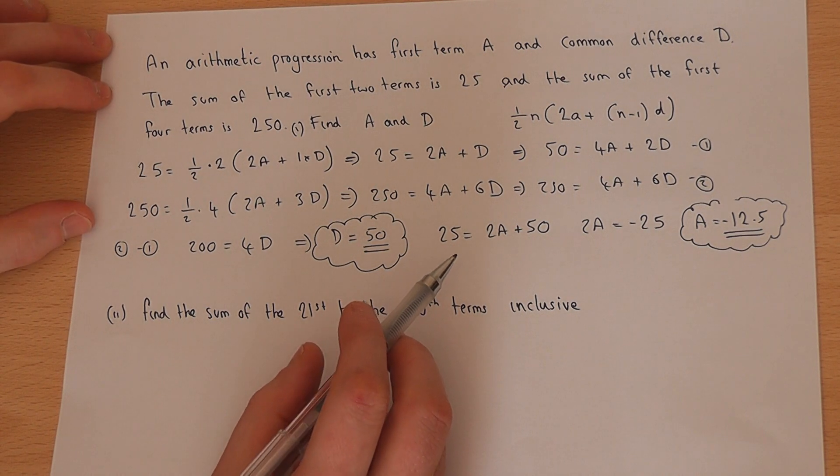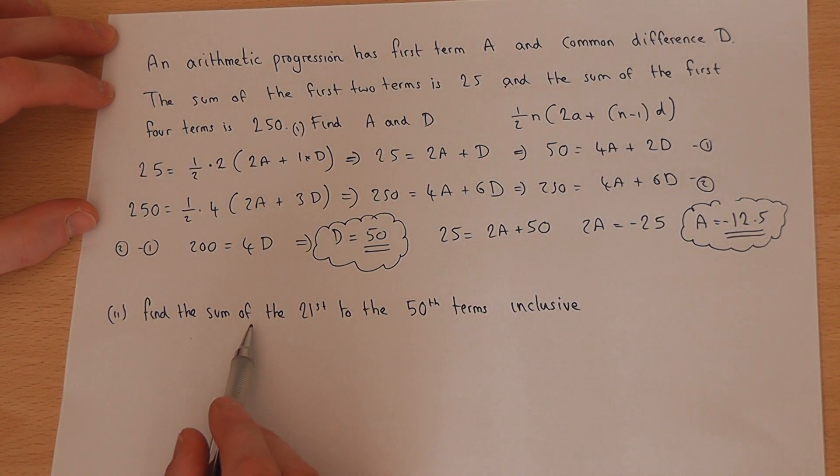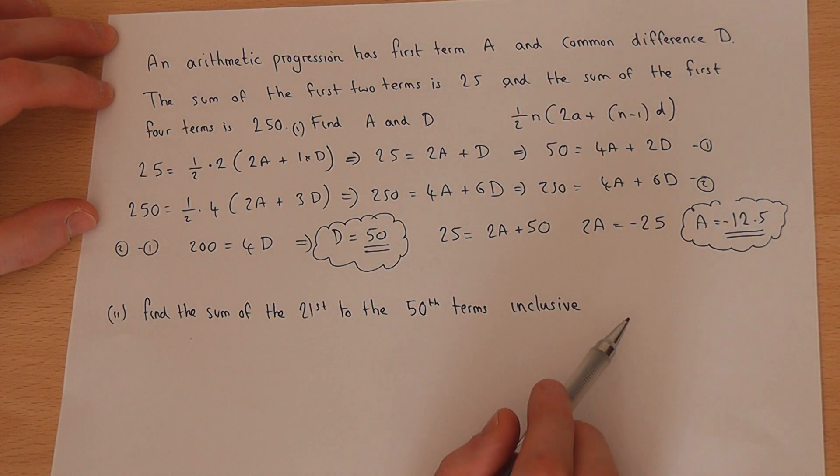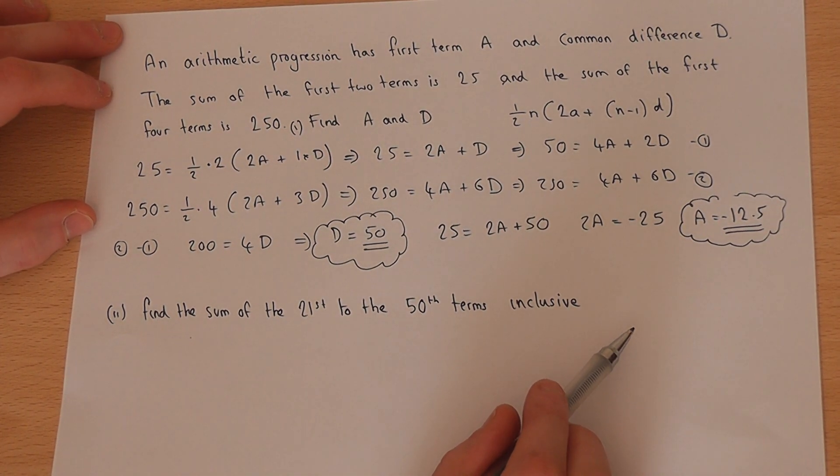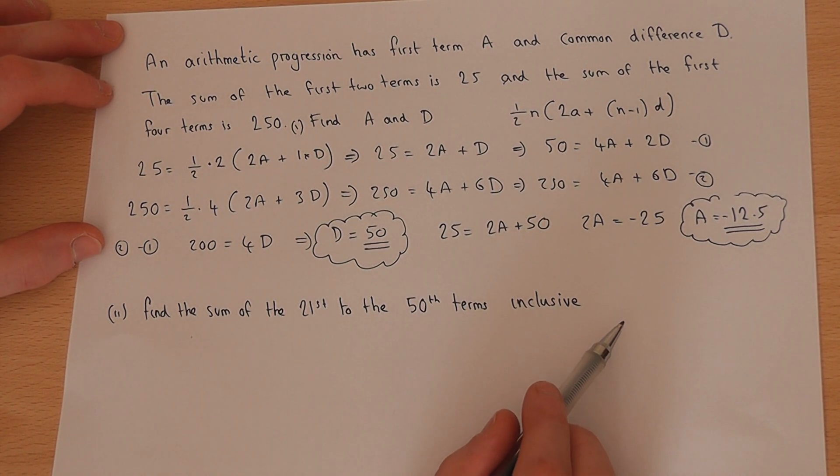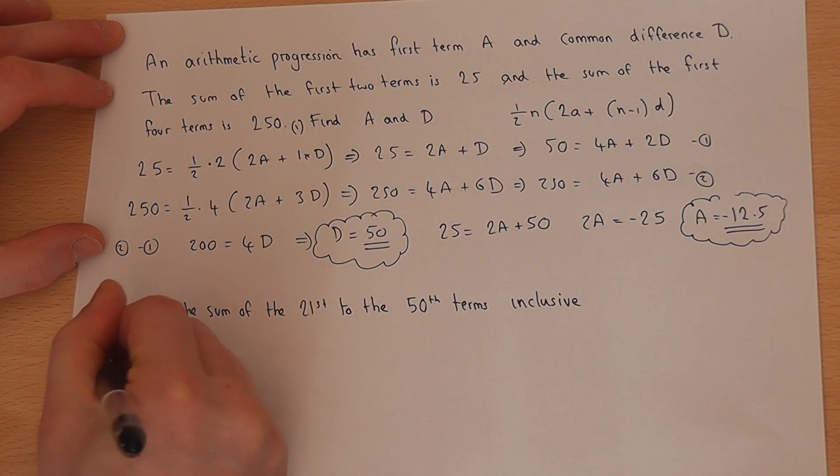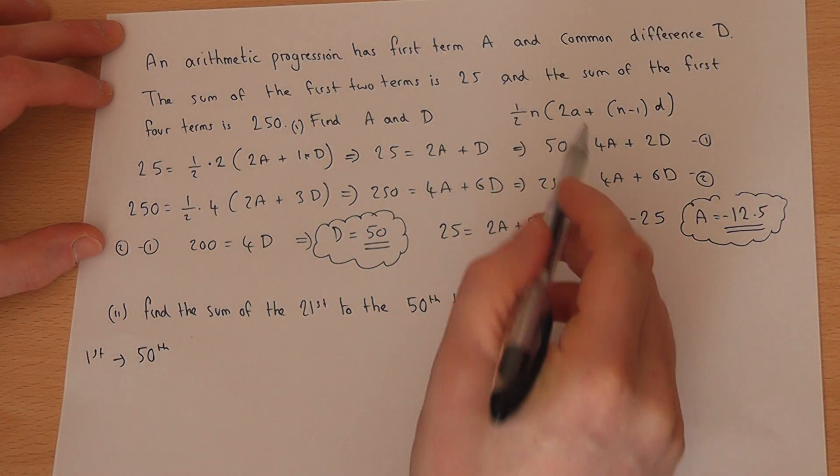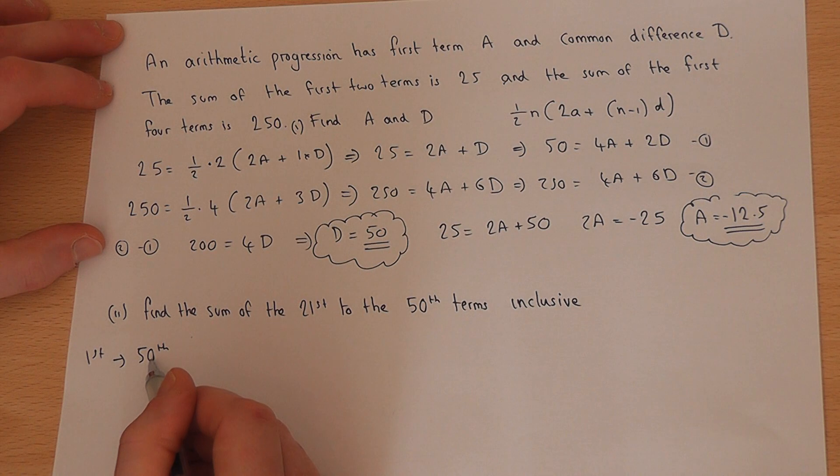Having found that, the question then asks to find the sum of the 21st to the 50th term inclusive. Now to do this, I begin by finding the sum of the first term up to the 50th term using the general formula.